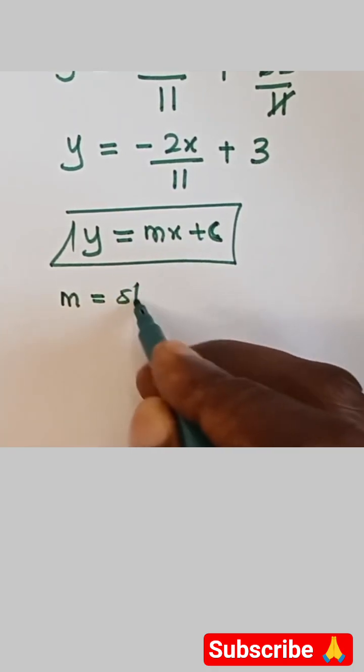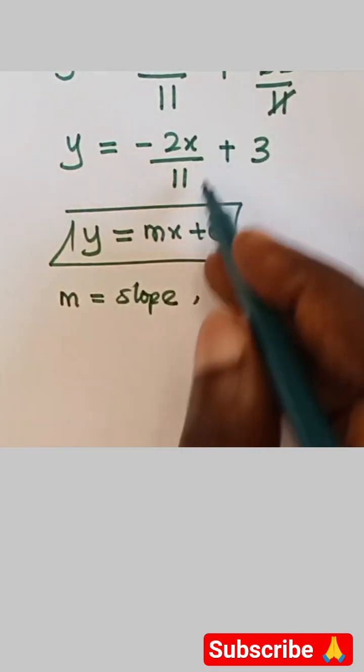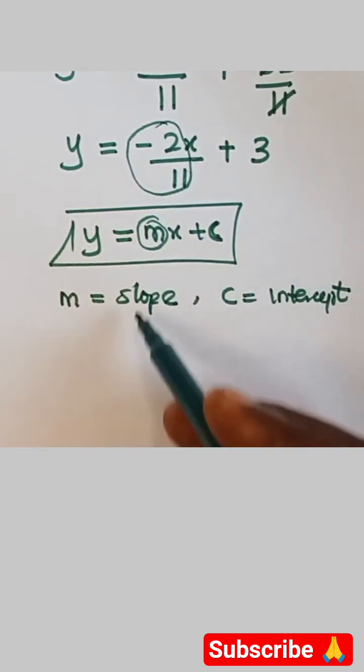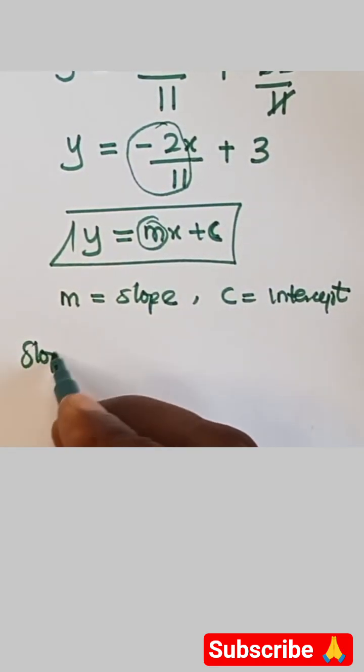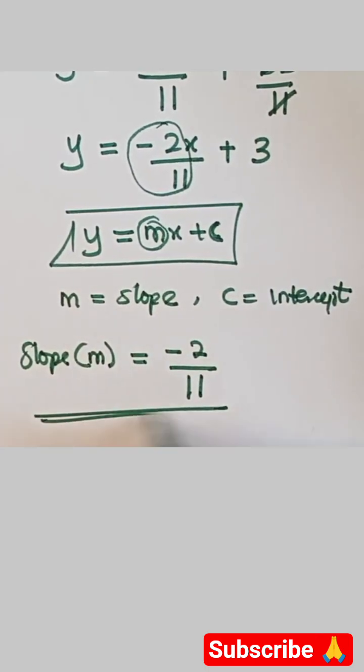So it means our m is the slope and our c is the intercept. And then from here, this minus 2 over 11 represents the m. That means that our slope, therefore our slope which is m, is equal to minus 2 over 11, and that is the final answer.